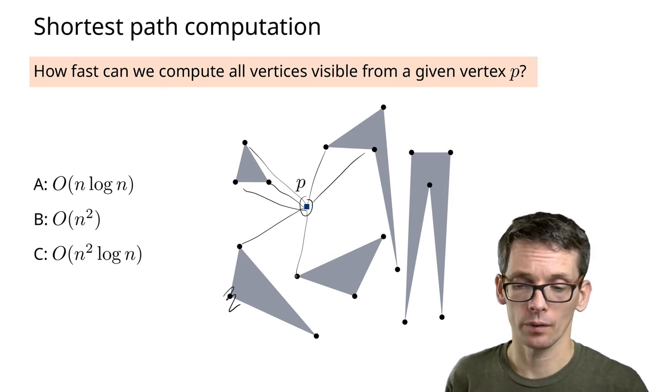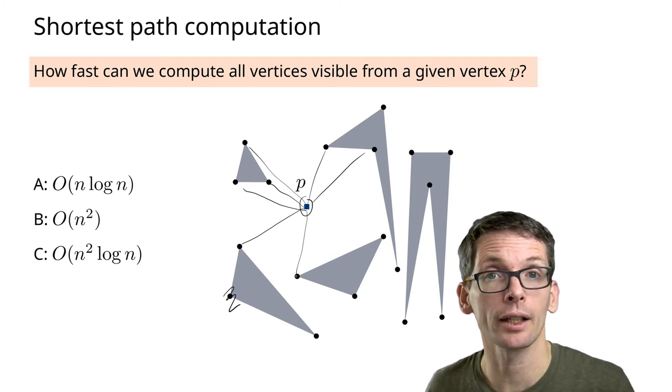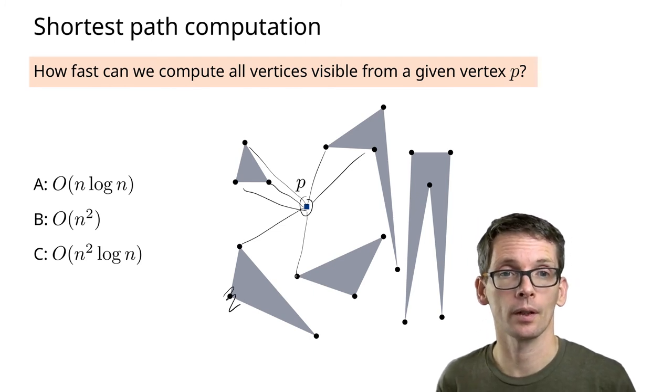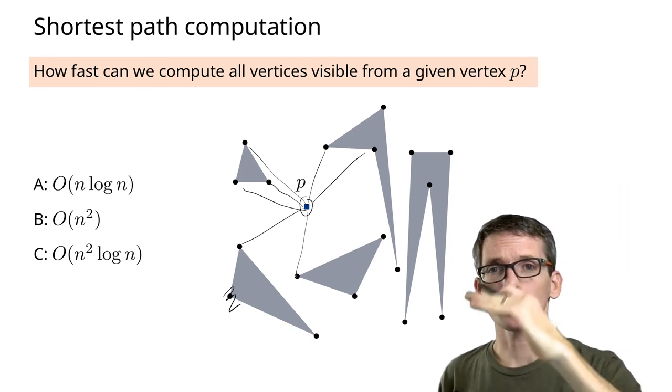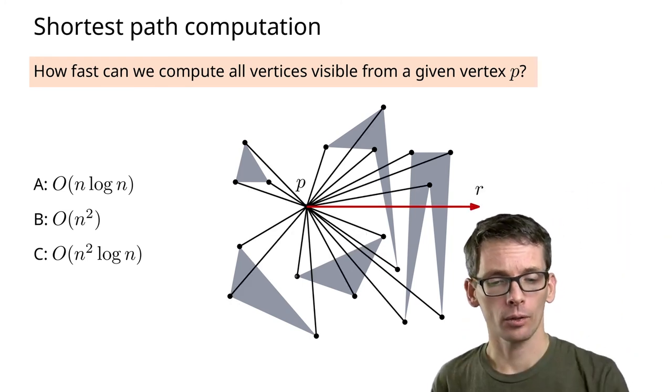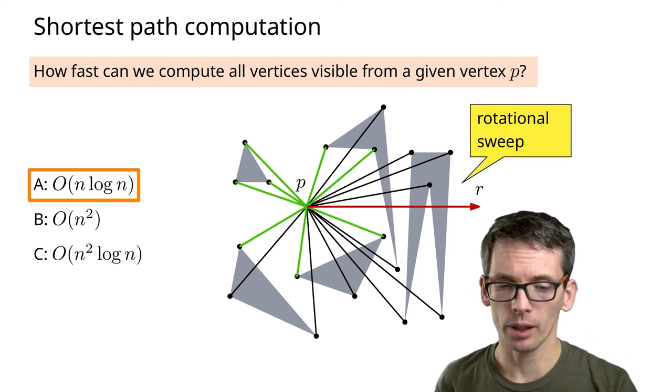How fast can I do this? O(n log n) time, O(n²) time, or O(n² log n) time. We do a rotational sweep. We start in some direction, do a rotational sweep, and in this way we can do this in n log n time.